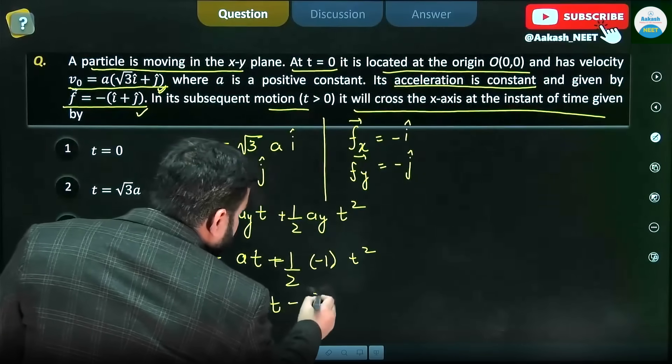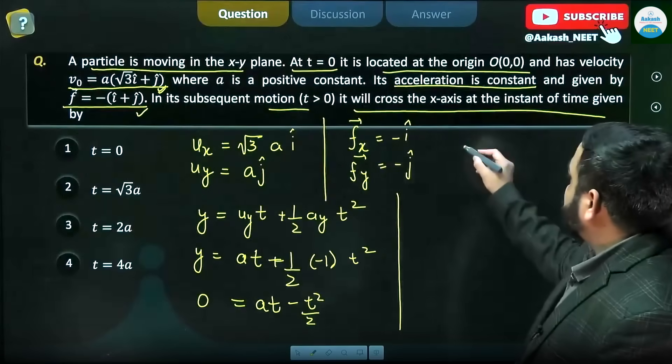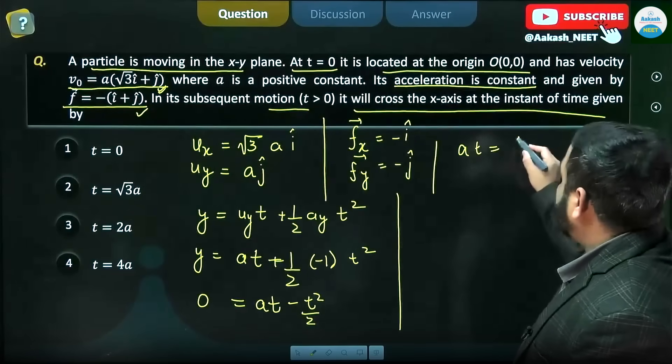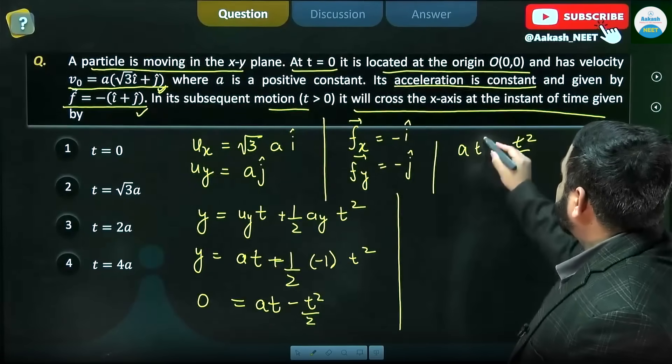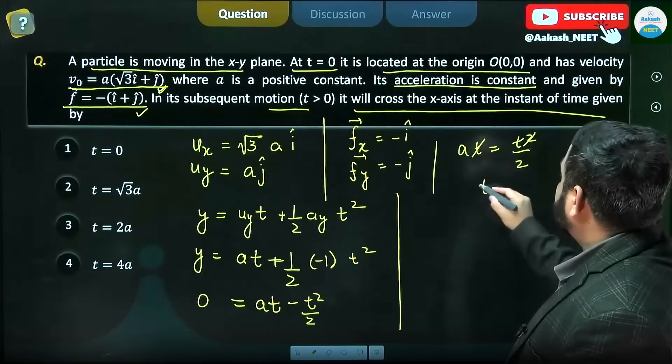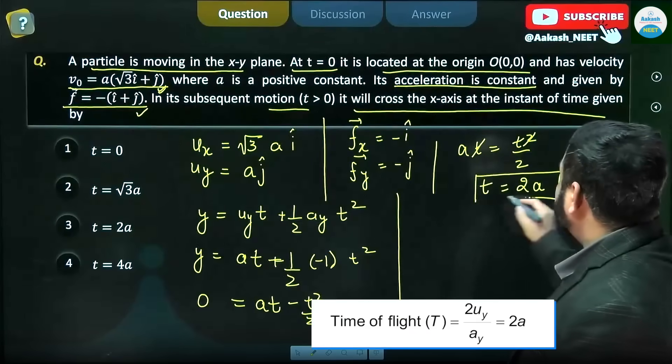at - t²/2. So at here will be equal to t²/2, so this a will be eliminated, so t will be equal to 2a, where a is a constant.